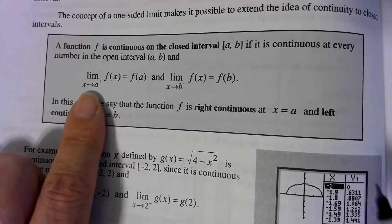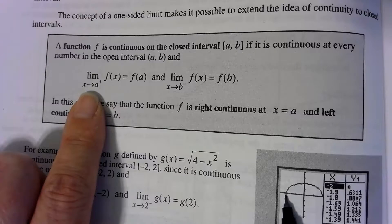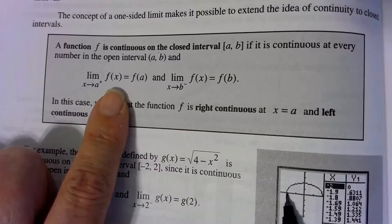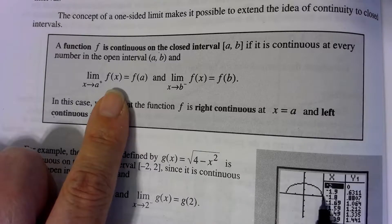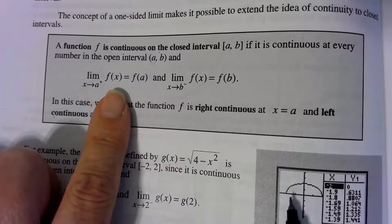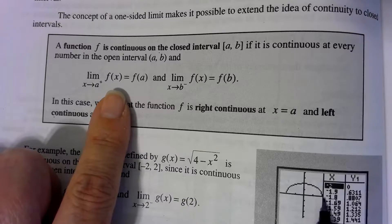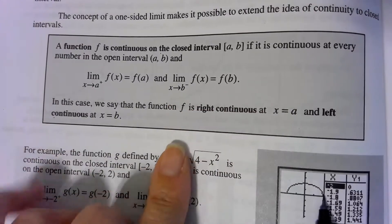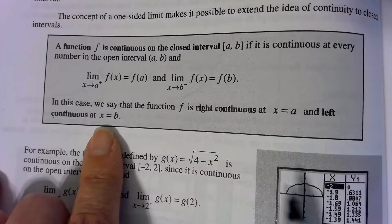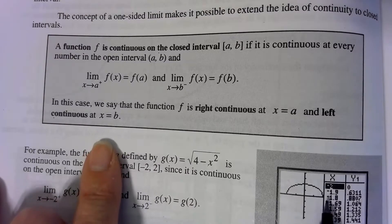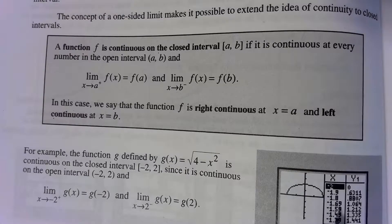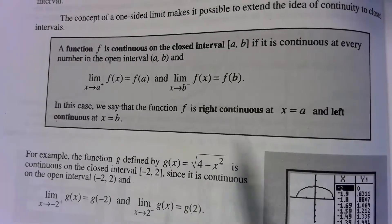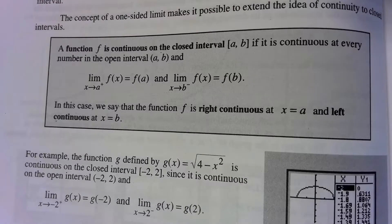We call these one-sided limits. The limit as x approaches a from the right — if I approach from the right it's 0, and f of 2 is 0, so they're equivalent. Likewise, the limit as x approaches b from the left — I can't come in from the right, there is no graph there. But if I come in from the left toward that endpoint, the limit is 0 from the left, and f of 2 is 0, so they're equivalent. When that happens, we say the function is right continuous or left continuous, depending on which direction we're going.